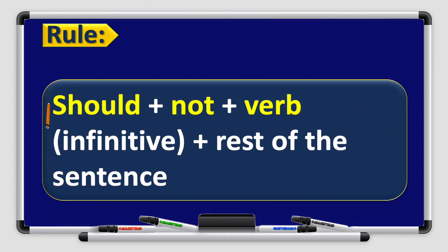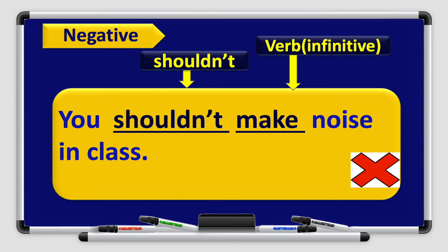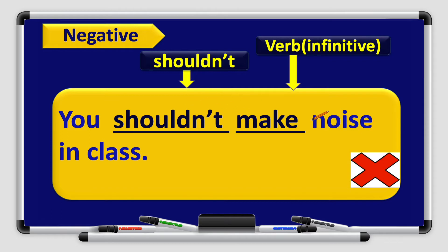What about the negative? Should + not + verb in the infinitive form + rest of the sentence. If I want to give advice in the negative form, I will use the modal verb should + not + verb in the infinitive form and the rest of the sentence. For example: 'You shouldn't make noise in class.' 'You' is the subject, 'should' is the modal verb, 'not' makes it negative, 'make' is the verb in the infinitive form, and 'noise in class' is the rest of the sentence.